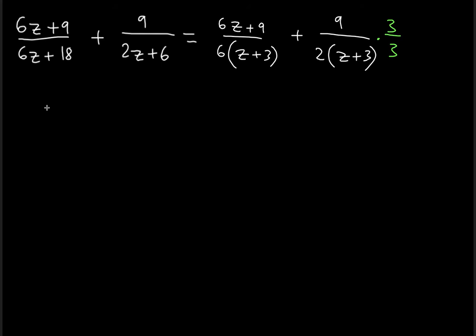So as a result, what you get is 6z plus 9 plus 27, and that can be divided now by the same denominator, the least common denominator, which is 6 multiplied by z plus 3.